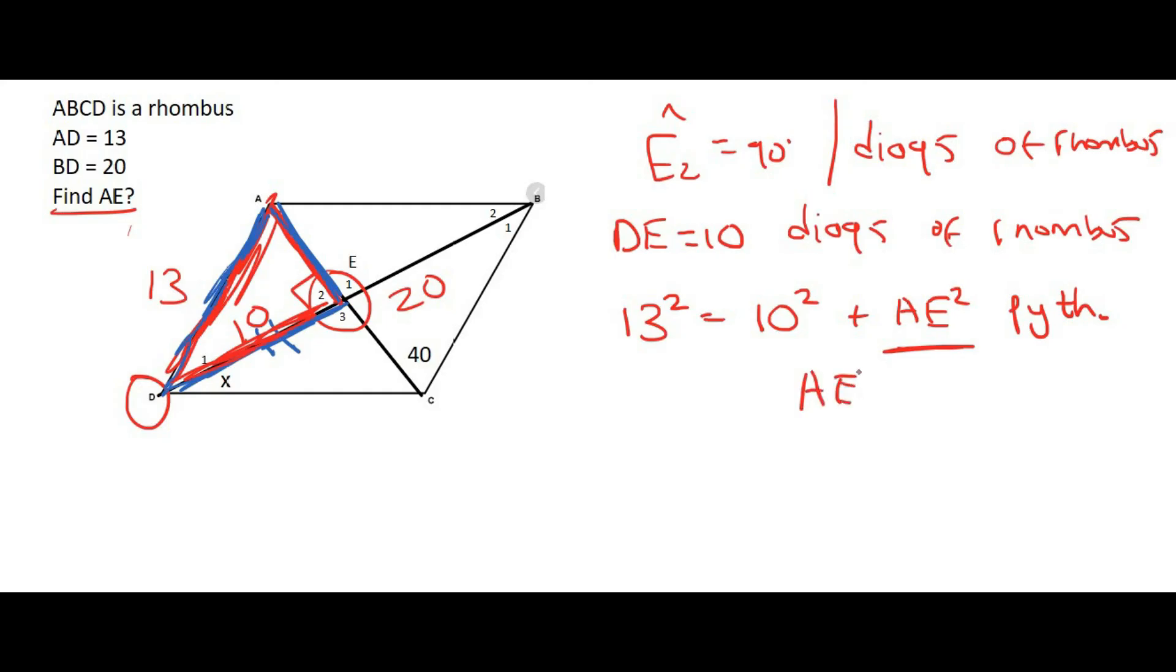So it will be AE squared equals to 13 squared minus 10 squared. And so AE squared is going to be equal to 69. And then to get AE by itself, you take the square root. And that's going to give us 8.31. 8.31. And there we go, guys.